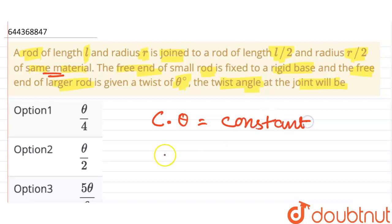Alright, where c is pi eta r raised to the power 4 upon 2l into theta. This is constant.